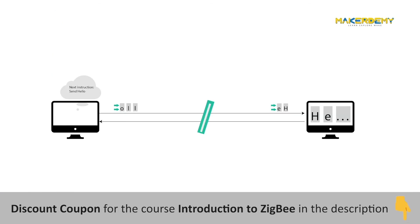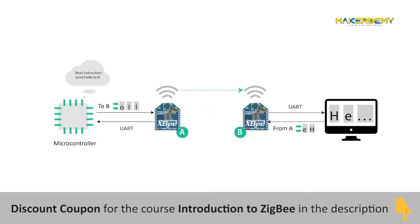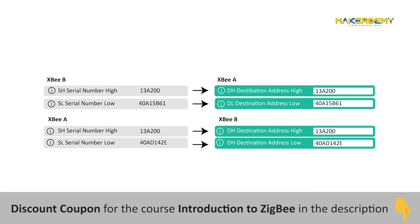When operating in transparent mode, an XBee module acts as a serial line replacement. All data received through serial input is immediately transmitted over the air. When the receiver XBee module receives wireless data, it is sent out through the serial interface exactly as it is received. In fact, communication in transparent mode is the same as if the two modules were connected by a wire — the wireless communication makes the physical wire unnecessary.